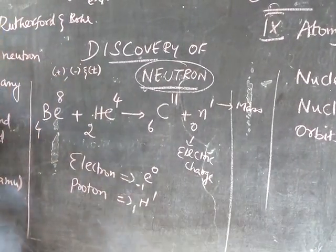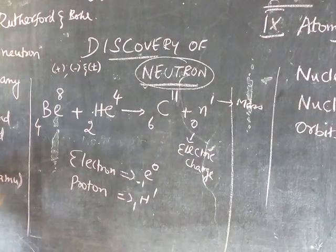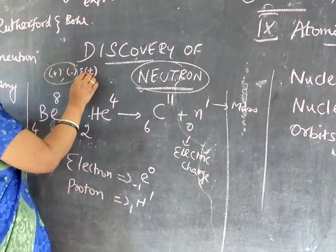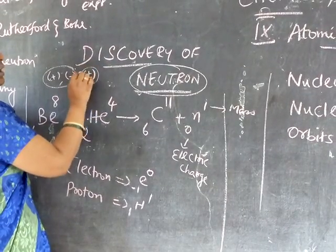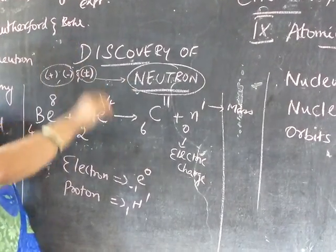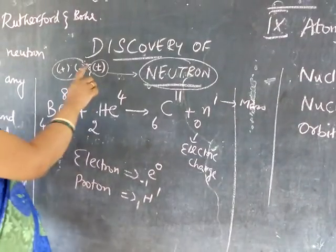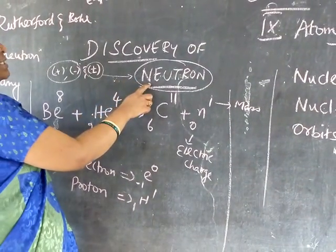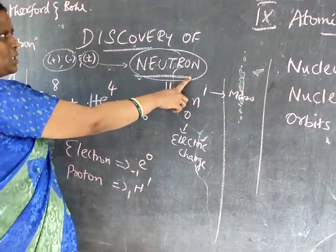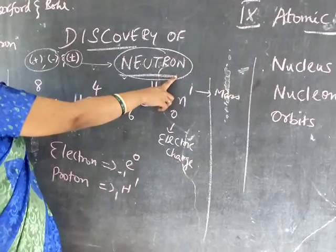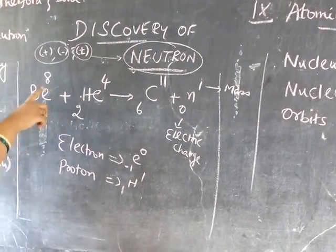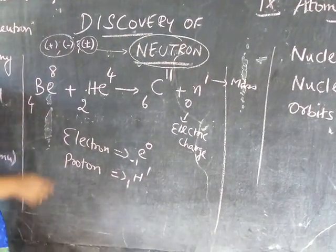Proton and electron discovery you will study later in detail. Now, neutrons alone it is given to you. Neutrons, when we are saying, it doesn't possess any charge. You know about that. Let us see how this neutron is formed.